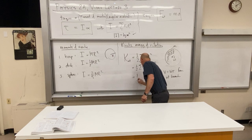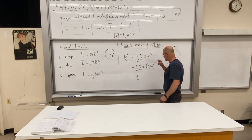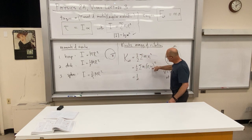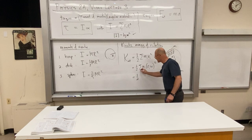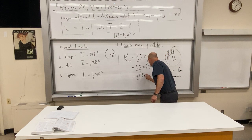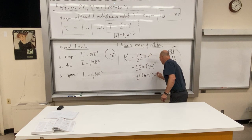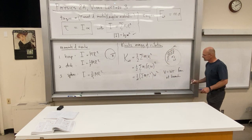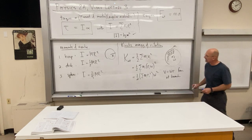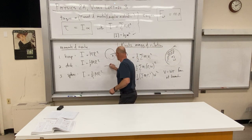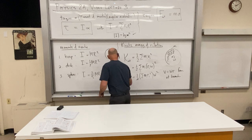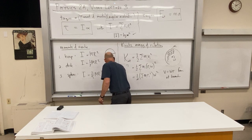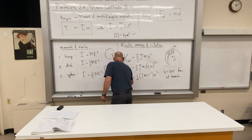Each little mass element m_i is zooming around. One-half sum of individual mass times speed squared — from rotational motion we know v = r omega. So we get one-half times the sum of m_i r_i squared times omega squared. The omega is common to everything, so we can write one-half I omega squared. Kinetic energy of rotation equals one-half I omega squared.